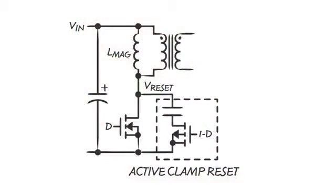Active clamp reset uses an additional capacitor and switch to apply a reset voltage during the converter's off time, keeping the magnetizing current centered around zero.